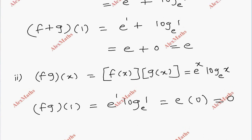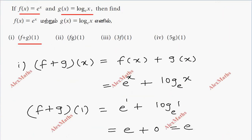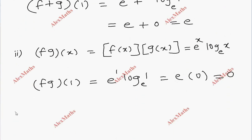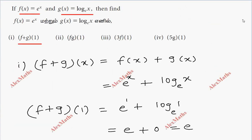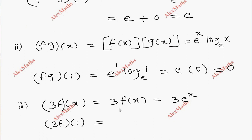The third operation is 3f of 1. So 3f of x is nothing but 3 into f of x, which is 3 into e power x. Substituting x equal to 1, we have 3 into e power 1, which equals 3e.